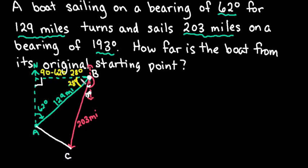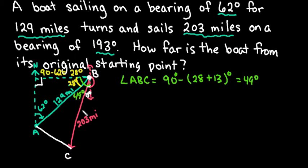Then I'm going to use the fact that this whole thing again forms a right angle. So to find angle ABC, I'm going to do 90 minus the sum of 28 and 13. The reason I'm doing the 28 and 13 is because this little angle here is 28, this little angle is 13, and together all three of them add up to be the 90 degree angle. This ends up giving me 49 degrees.